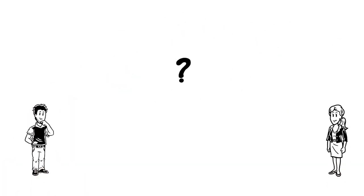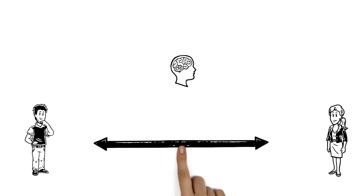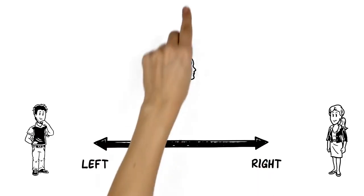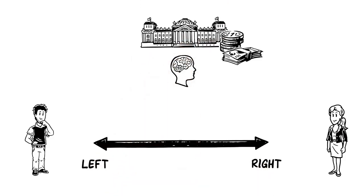To answer these questions, we need to understand the political spectrum. The first dimension of the spectrum is from left to right. This describes how much the government should be involved in the economy.